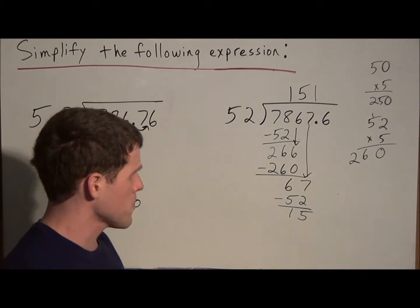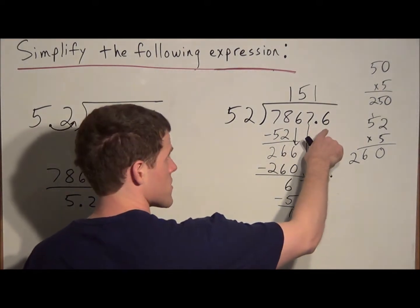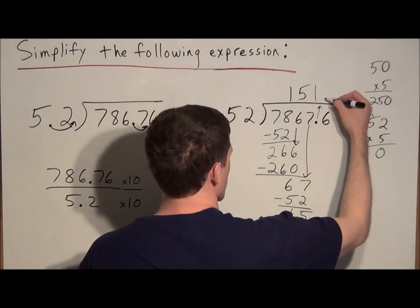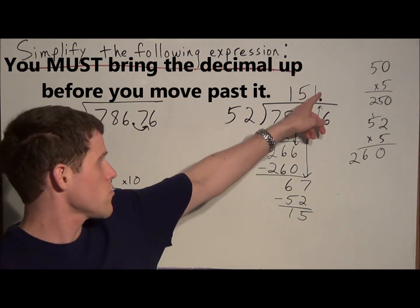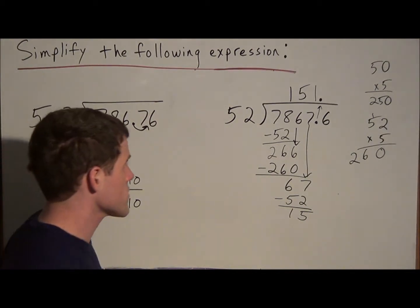We have a remainder of 15. But before we bring the next number down, notice that we have to go past the decimal. So now we're going to, in some ways, bring this decimal up. We bring it straight up, so we know we're going to bring this to right in front of the 1. So now we have 151 point, and we're going to find out the rest of our answer.